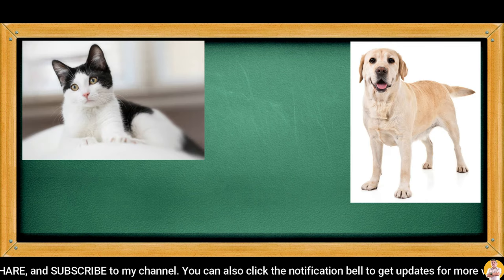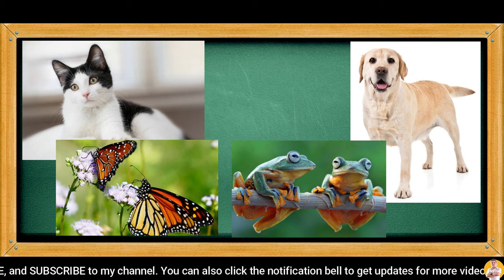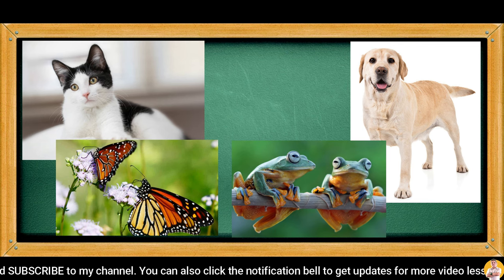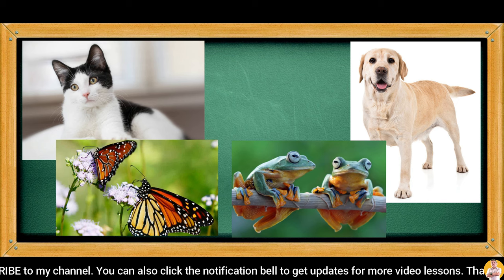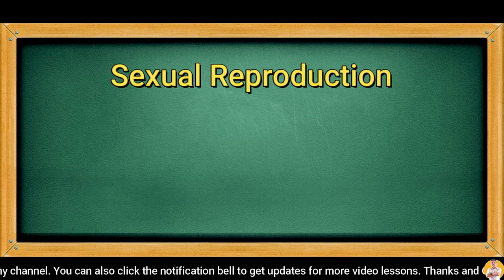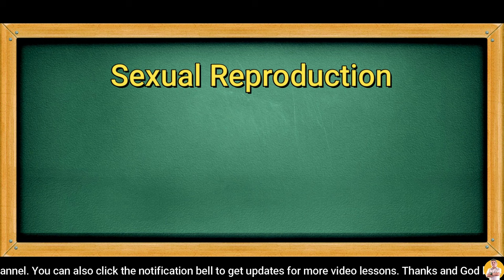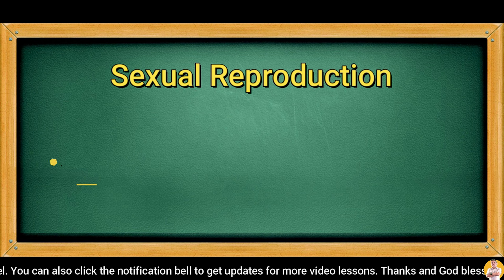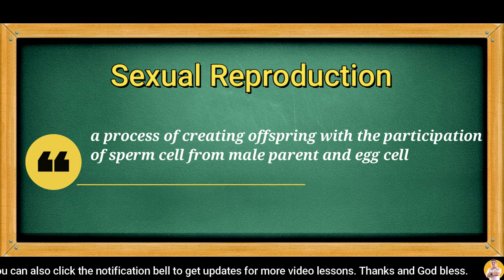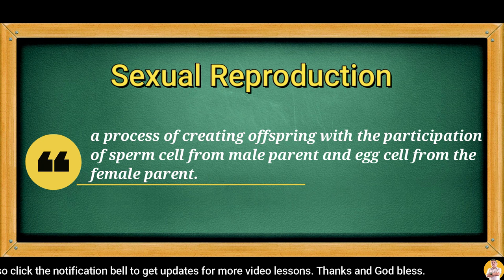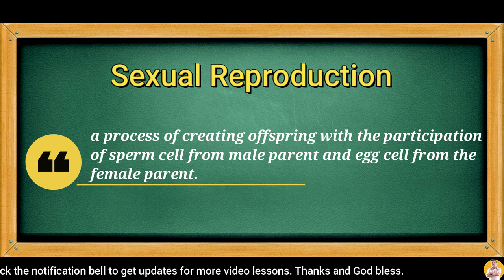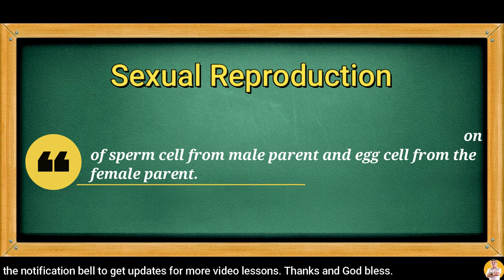Most animals like cats, dogs, butterflies, and frogs need a male and a female to reproduce. This is called sexual reproduction — a process of creating offspring with the participation of a sperm cell from the male parent and an egg cell from the female parent.